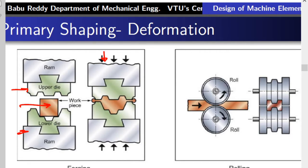Rolling is similar to the rollers you observe in a roadside sugarcane machine, except that the cross-section is as per our requirement. The rollers are shaped so that the required cross-section is obtained when a billet of material is passed through them. The billet comes out with reduced thickness, and the cross-section will match that of the rollers. By varying the roller cross-section, you can vary the output material's cross-section.